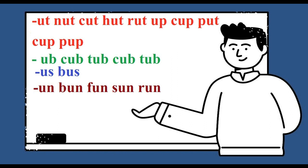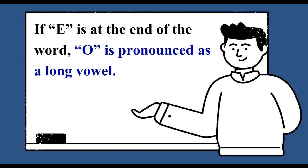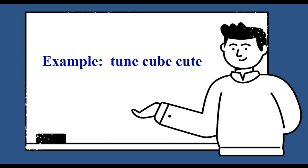Us, bus, un, bun, fun, sun, run, ug, bug, tug, mug, hug. If E is at the end of the word, U is pronounced as a long vowel. Example: tune, cube, cute.